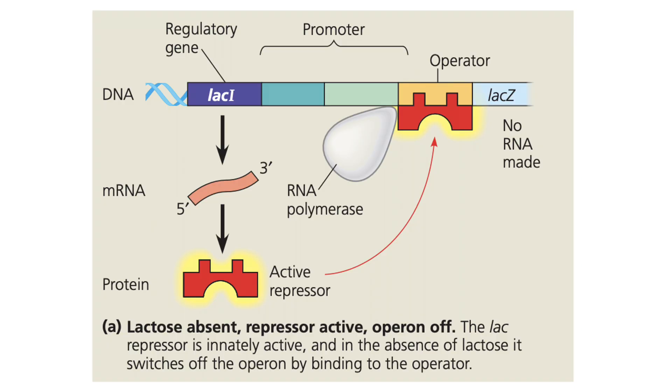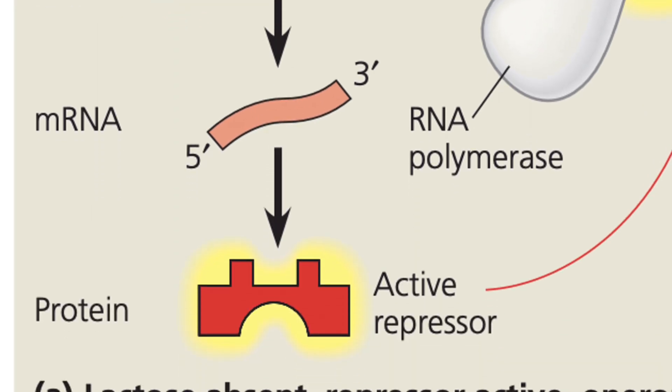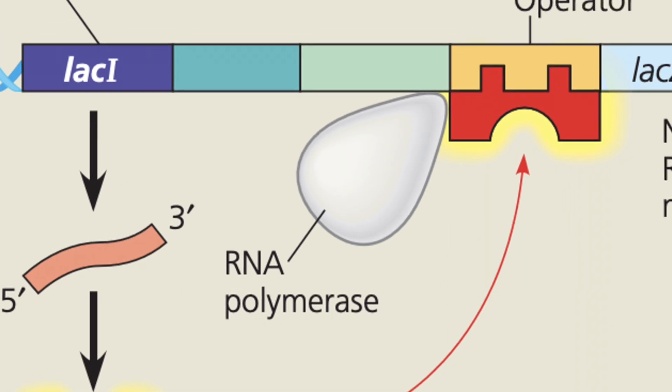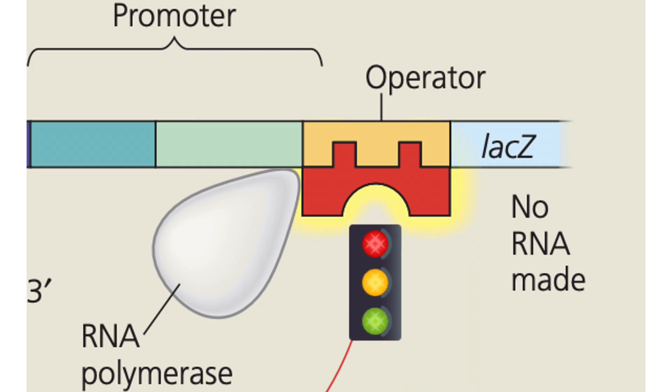Elsewhere along the chromosome is another gene, lac I, which is transcribed and translated with some regularity. The protein it creates is called the lac repressor protein. This repressor has a great structural and chemical affinity to the operator region. With lac repressor proteins in the cytoplasm, they bind to the operator, physically blocking RNA polymerase from getting past the operator to the structural genes. This inhibits expression of all three genes — Z, Y, and A. This is just the normal state of things in the absence of lactose, which is fine because without lactose there's no reason to express these genes.